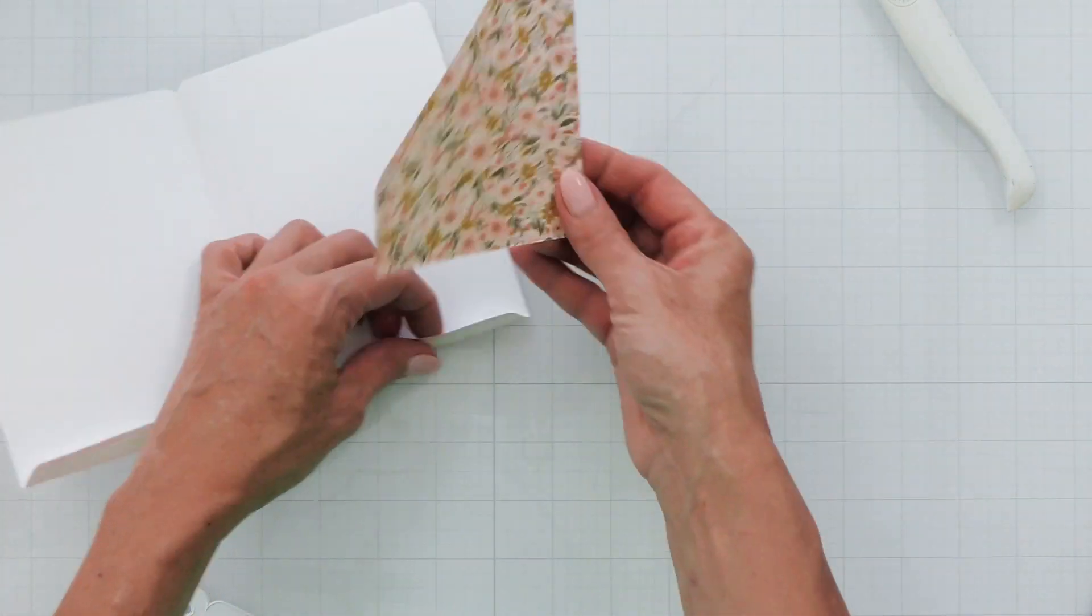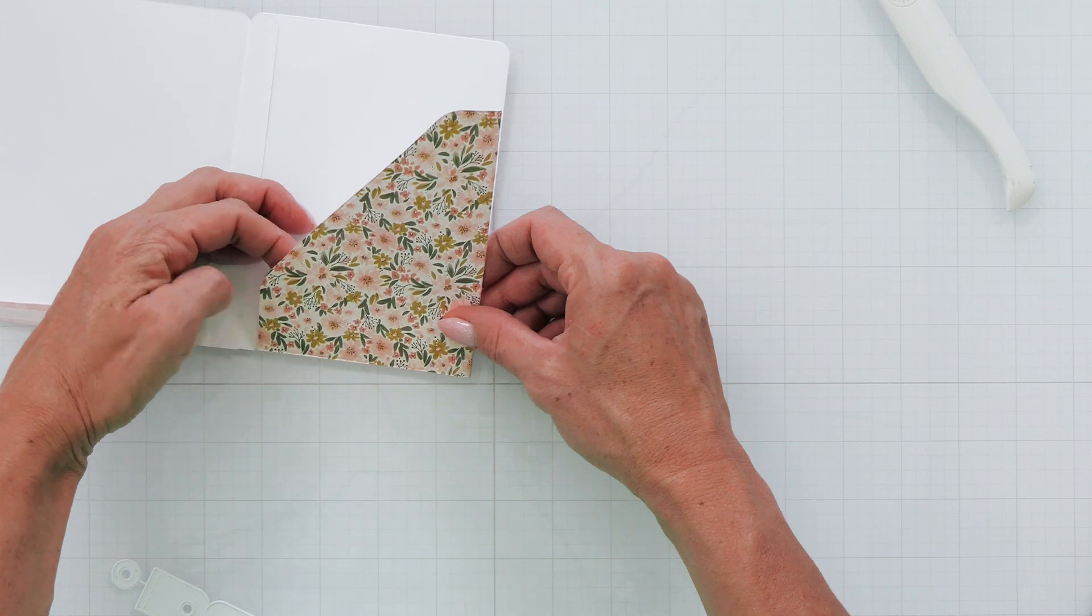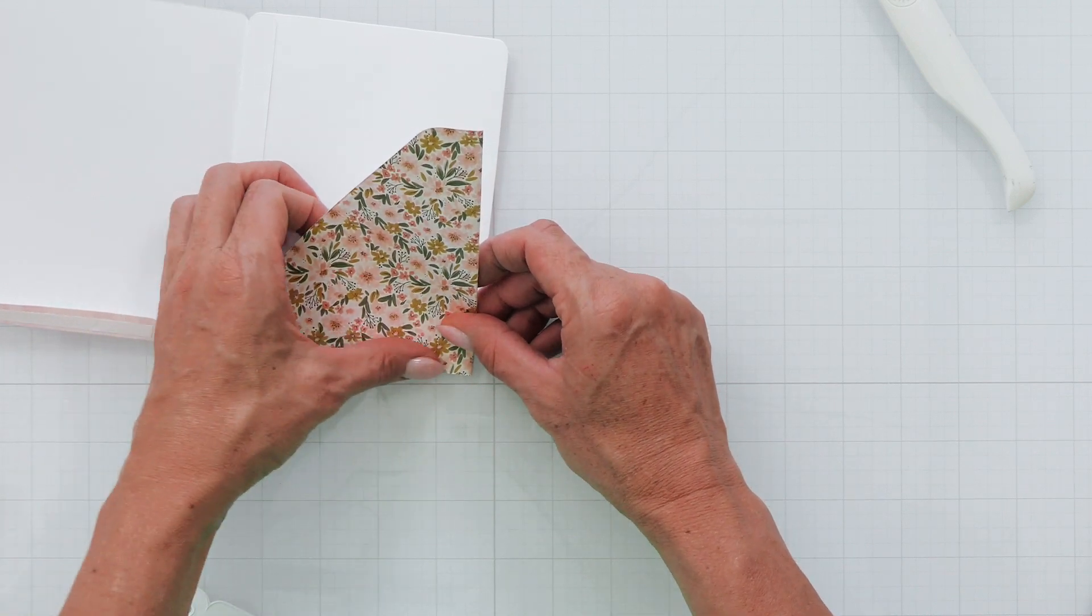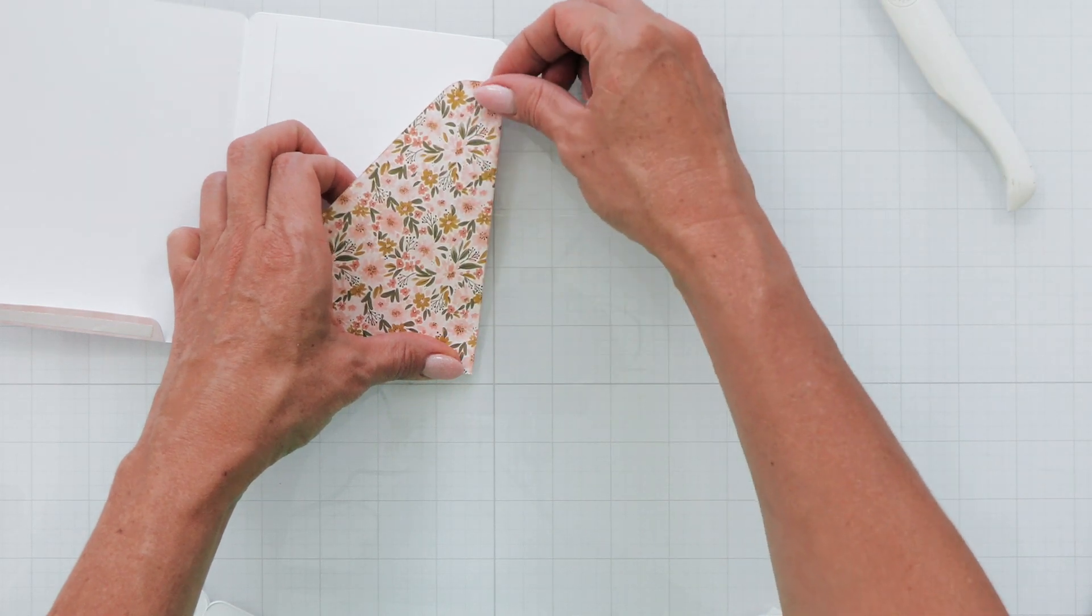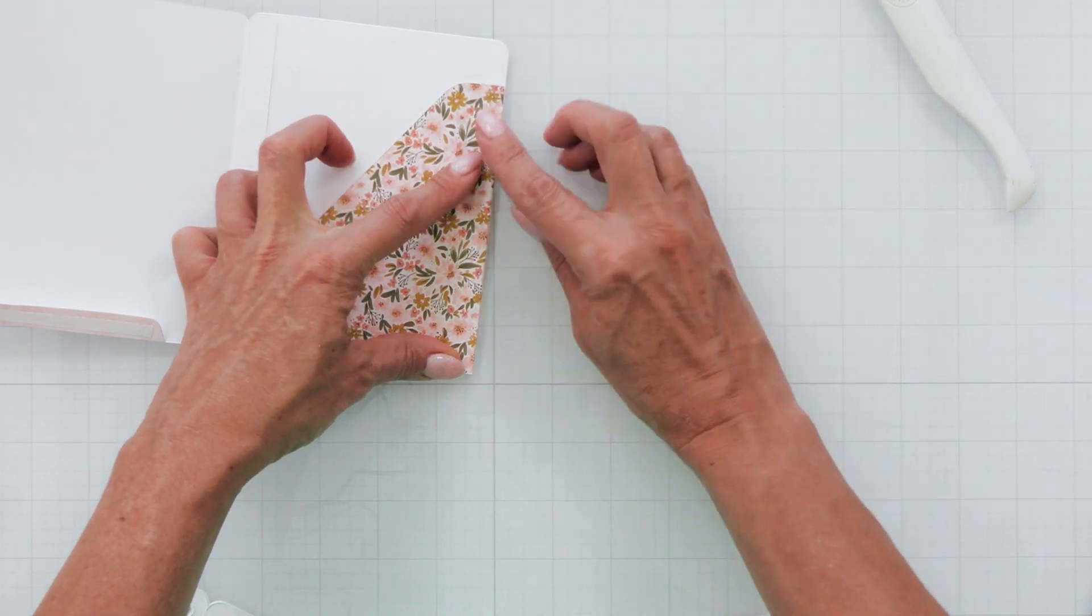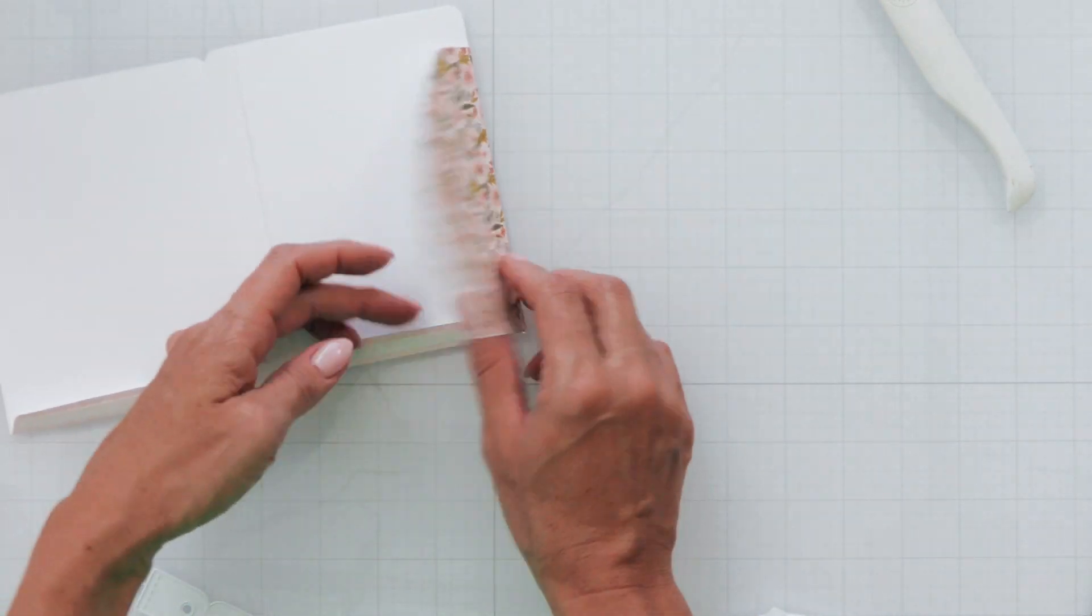To secure these pockets in place I find it easiest to fold over that edge and then line up the bottom to the right corner, and then gently place that right side so it's aligned perfectly with the folder.